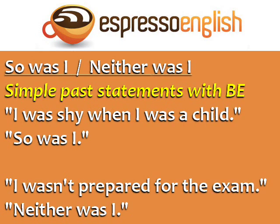'I didn't go to college' — neither did I. 'So was I' and 'neither was I' are used to respond to simple past statements with be. 'I was shy when I was a child' — so was I. 'I wasn't prepared for the exam' — neither was I.